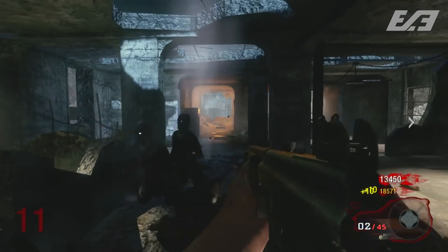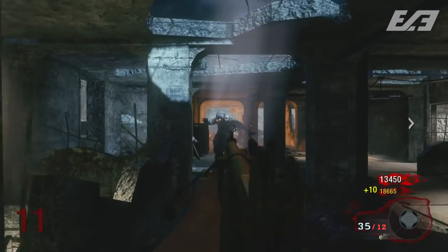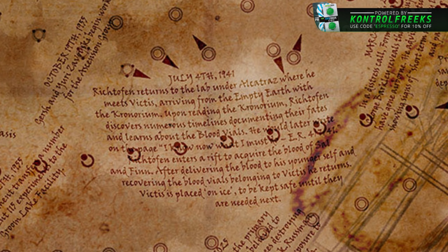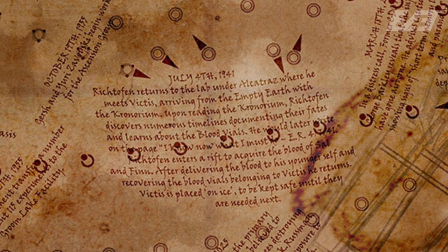This becomes a canon tie-in when we look at the Dimension 63 category of the storyline. On July 4th, 1941, Rictoffin returns to the lab under Alcatraz where he meets Victus — the Green Run or Transit crew — arriving from the Empty Earth with the Kronorium. Upon reading it, Rictoffin discovers numerous timelines documenting their fates and learns about the blood files, writing 'I know now what I must do — ER 4741.' He then enters a rift to acquire the blood of Sal and Finn, delivers it to his younger self, recovers blood vials belonging to Victus, and Victus is placed on ice to be kept safe until needed. Following this, Primus — the Origins four we follow throughout Black Ops 3 — arrives to collect the Victus blood vial samples from Rictoffin, after which Rictoffin learns the location of the summoning key.